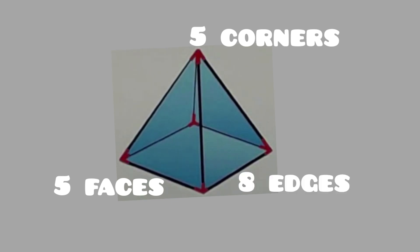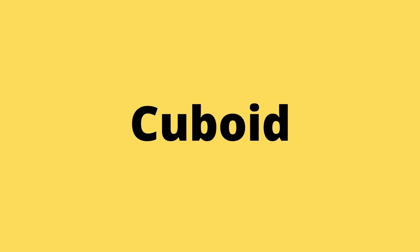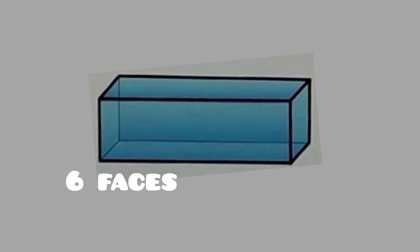The square base pyramid has eight edges: one, two, three, four, five, six, seven, and eight. Now let's look at the cuboid. Let's count the faces — a cuboid also has six faces: one, two, three, four, five, and six.